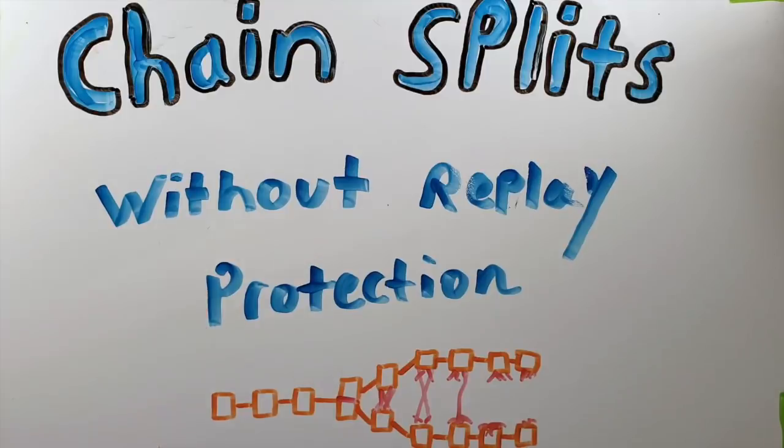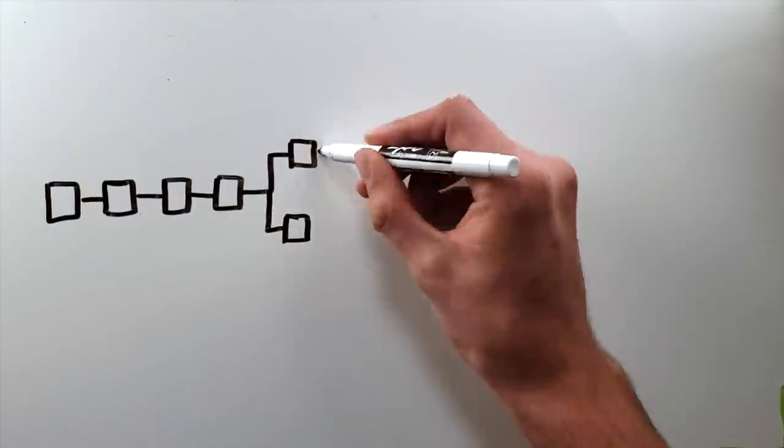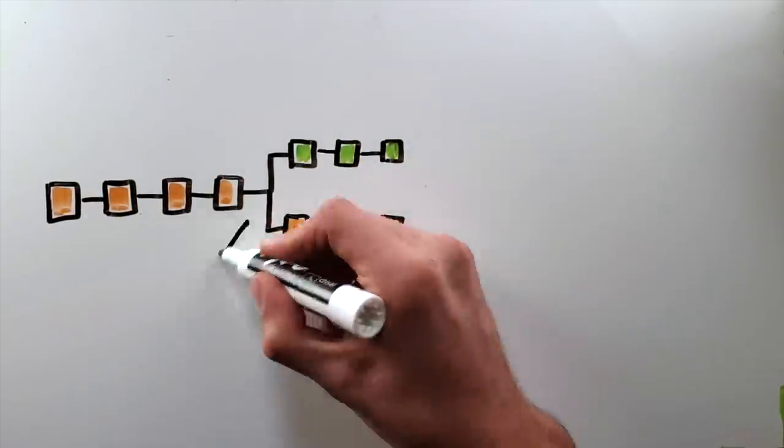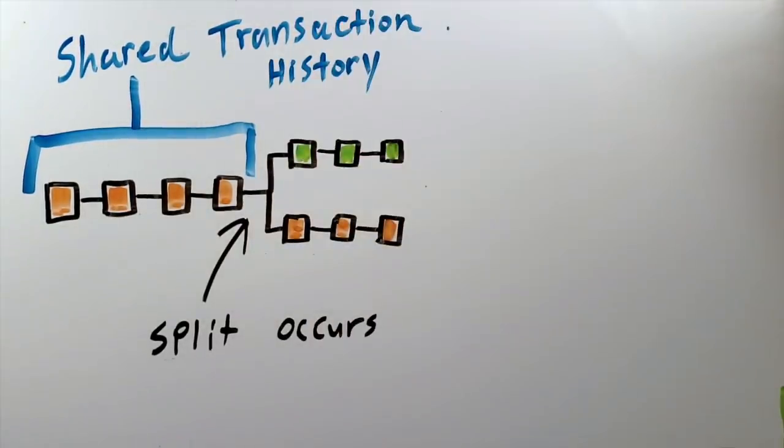So first we need to look at what a replay transaction is. Whenever a chain splits, you have multiple blockchains that have the same shared history. This means they share the same keys, they share the same addresses, they share the same transaction data, pretty much everything.